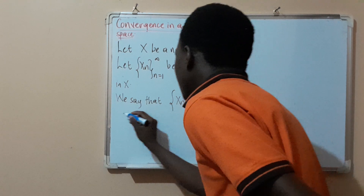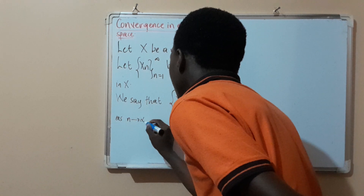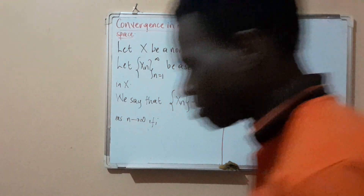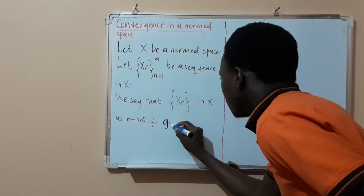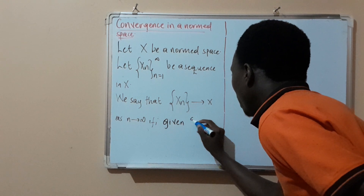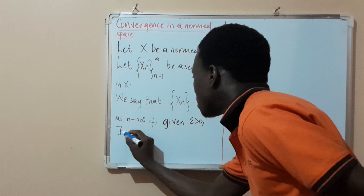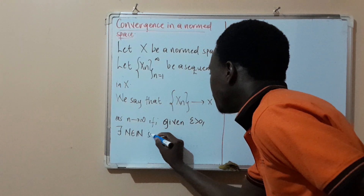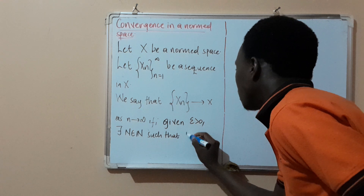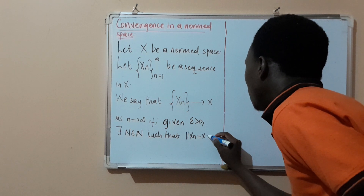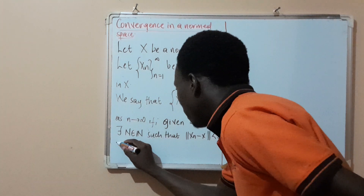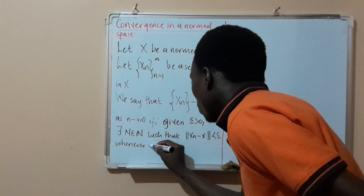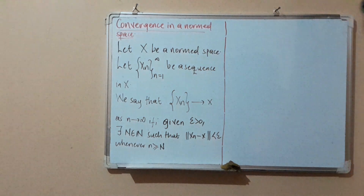...this sequence converges to x as n goes to infinity if, given epsilon greater than zero, there exists a natural number N such that the norm of x_n minus x is less than epsilon, whenever n is greater than or equal to N.